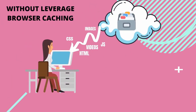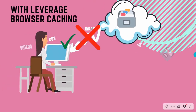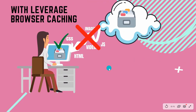When someone opens a website on their browser, all the files which are stored on the server are downloaded via the internet from the server to the user's computer. When you do not have leverage browser caching on your website, every time somebody opens a website all these files are downloaded again and again. When you implement leverage browser caching, at the first load of your website all these files are stored on the user's computer, so when somebody visits your website a second time they do not need to download all these files because they are already available on the user's computer.